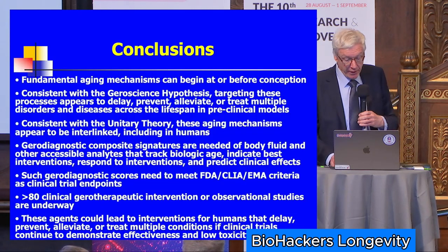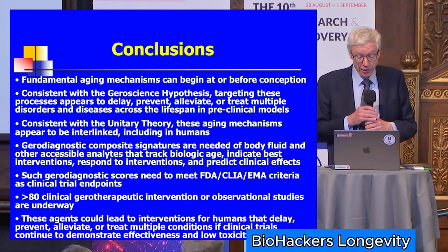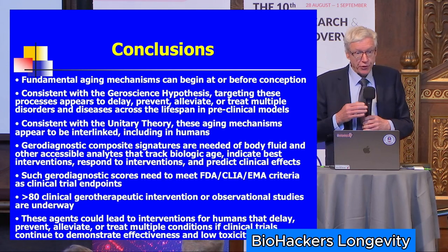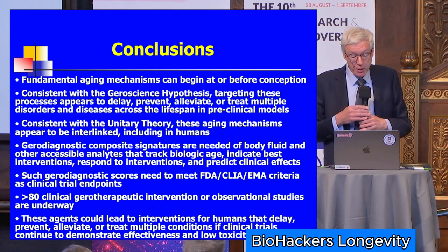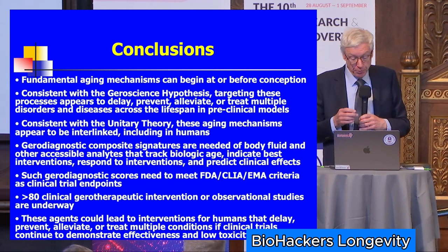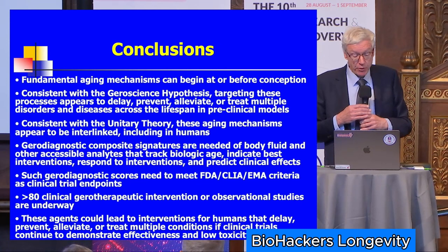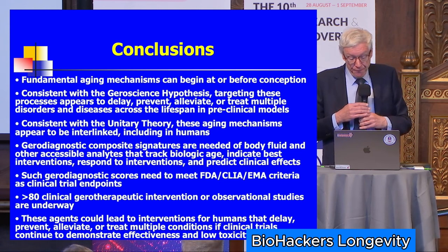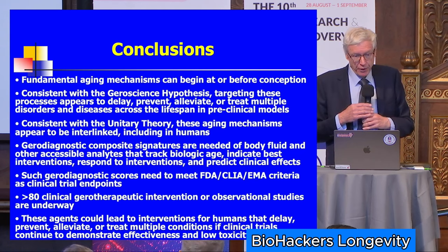In conclusion, fundamental aging mechanisms can begin at or before conception, consistent with the geroscience hypotheses. Targeting these processes can affect most of the others, something being tested through the Facility for Geroscience Analysis of the Translational Geroscience Network. Gerodiagnostic composite signatures of accessible body fluids will be needed to indicate which intervention to use when, show response to interventions, and predict clinical effects — ideally meeting FDA, CLIA, and EMA criteria as endpoints. Our view is that these interventions should not be used by the general public; the place to use them is in carefully controlled clinical trials until we know if they're safe and effective.